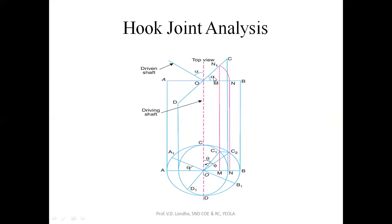Fork AB is in the horizontal plane, so it traces a circular path. Fork CD is in the vertical plane, so it traces an ellipse. Both forks have circular motion, but their paths differ due to their orientation.